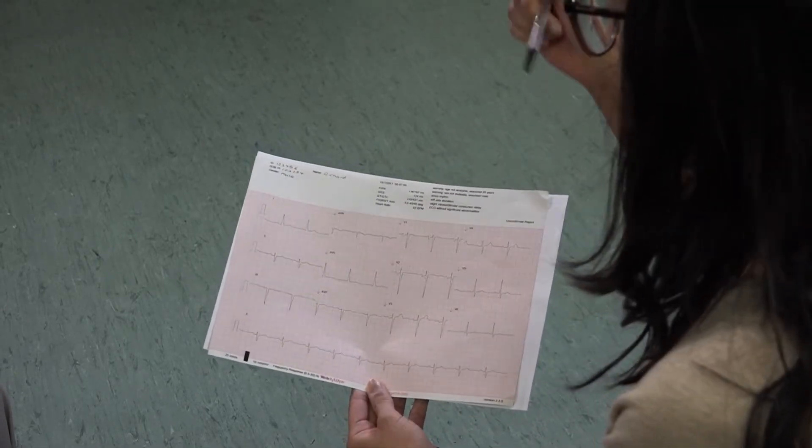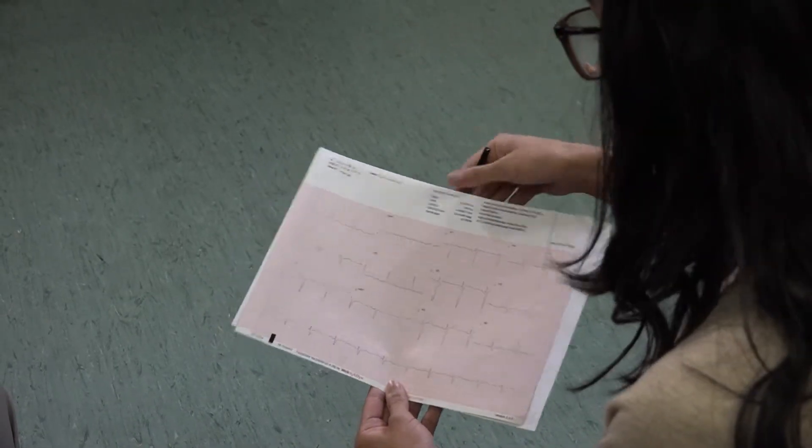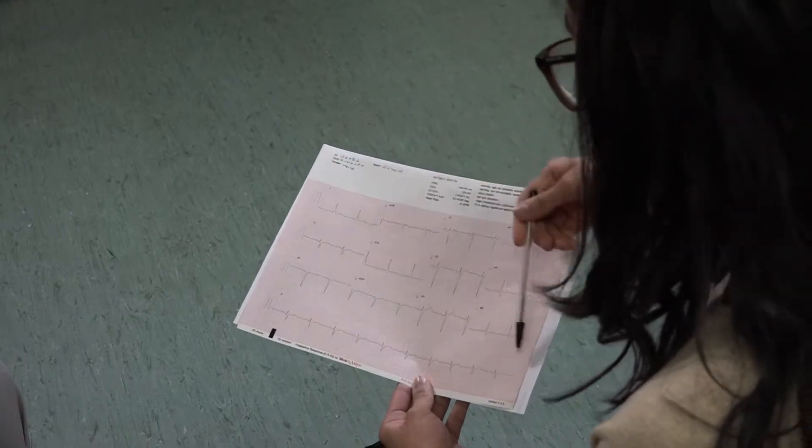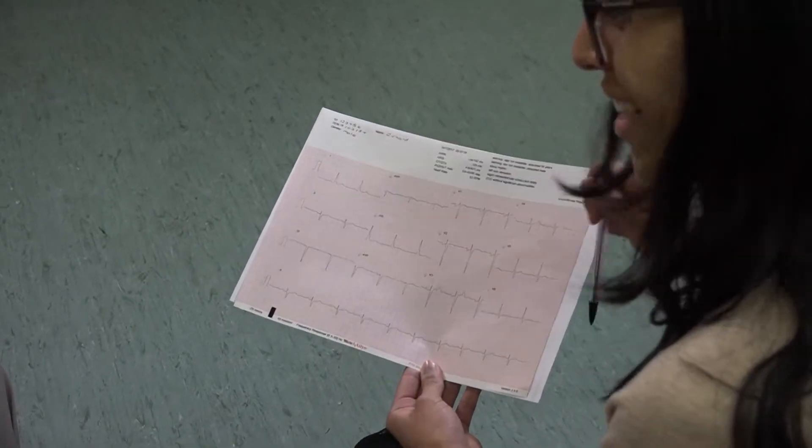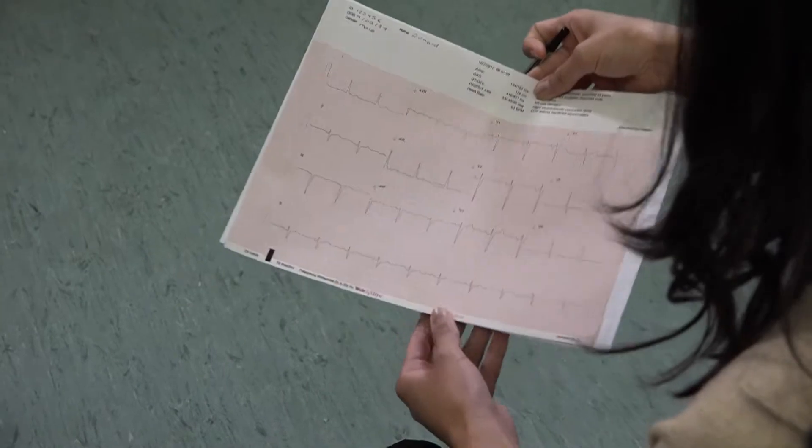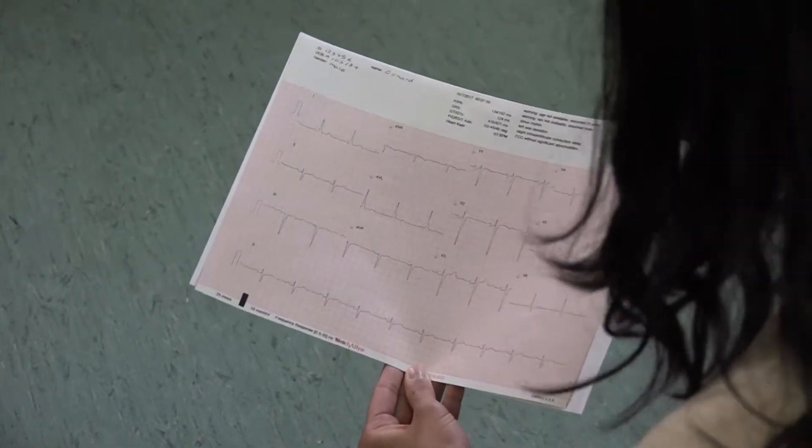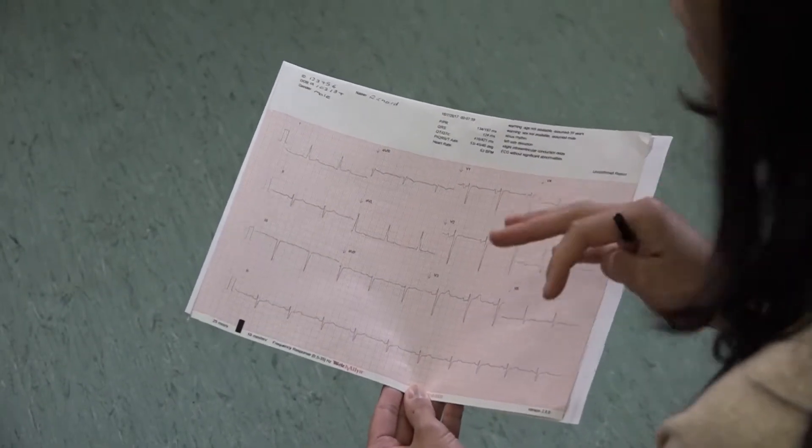The next thing you want to move on to is having a look at the rhythm of the ECG. The best place to look is right at the bottom, your rhythm strip, which is normally lead two. If on sort of a brief inspection it looks quite regular and you're happy with that, that's fine and you can move on.